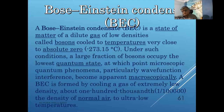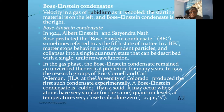Under such conditions, a large fraction of bosons occupy the lowest quantum state, at which point microscopic quantum phenomena — particularly wave function interference — become apparent macroscopically. A BEC is formed by cooling a gas of extremely low density, about 100,000th the density of normal air, at ultra-low temperatures. The BEC was generated using rubidium material — rubidium gas was cooled until the static state on the left converted to the BEC state on the right.